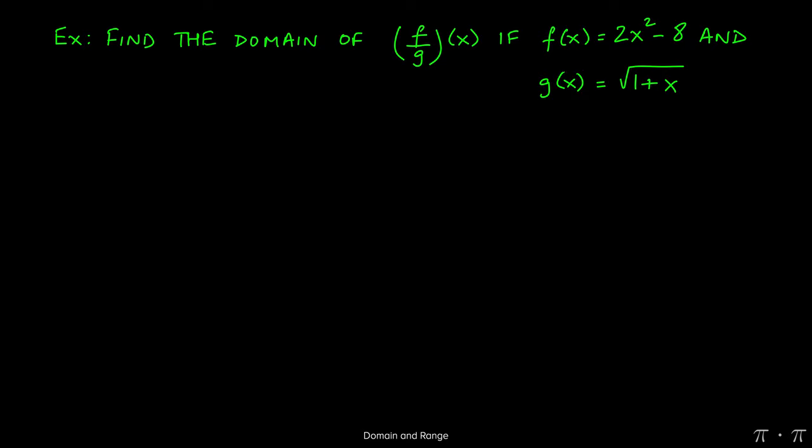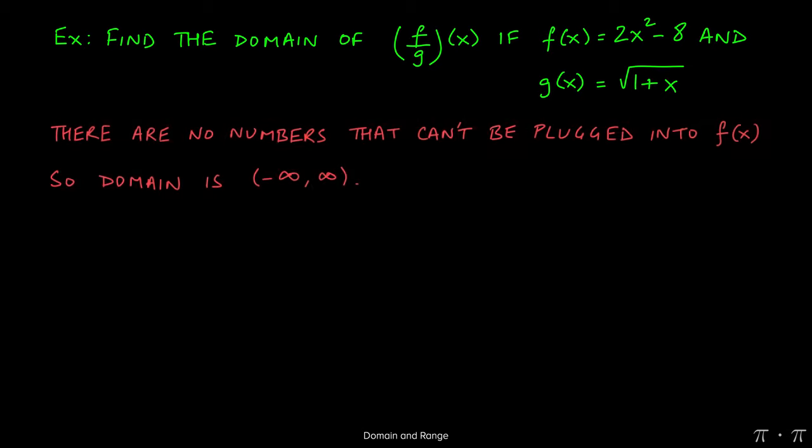First, we analyze the two functions individually. So for f of x, can you think of a number that you can't plug into this function? The answer, hopefully, is no. There is no number that we can't square and then multiply by 2.